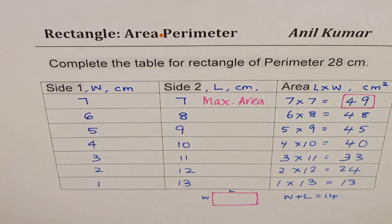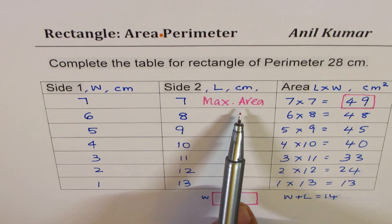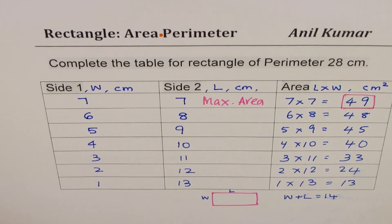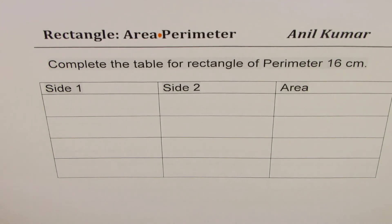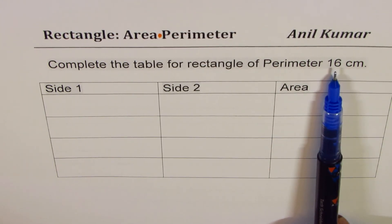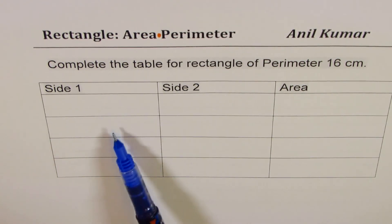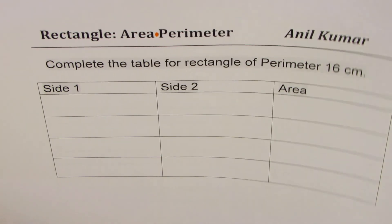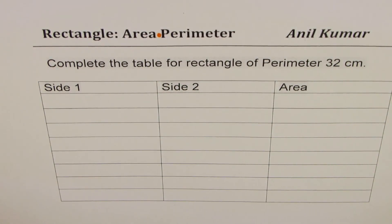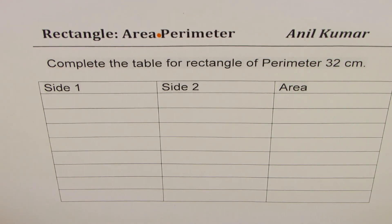It's a very important exercise to understand that for the same perimeter you get maximum area for a square. Now here are two more exercises for you: complete the table for a rectangle with perimeter 16 centimeters — half of 16 is 8, so pairs should sum to 8 — and then perimeter 32 centimeters. Please fill these up and share your answers in the comments. Thanks for watching, and I hope this helps many other students.